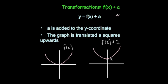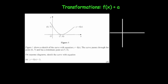If it was f(x) − a, then a would be subtracted from each one of the y-coordinates and the graph would be translated a squares downwards. So the graph would move down a squares.